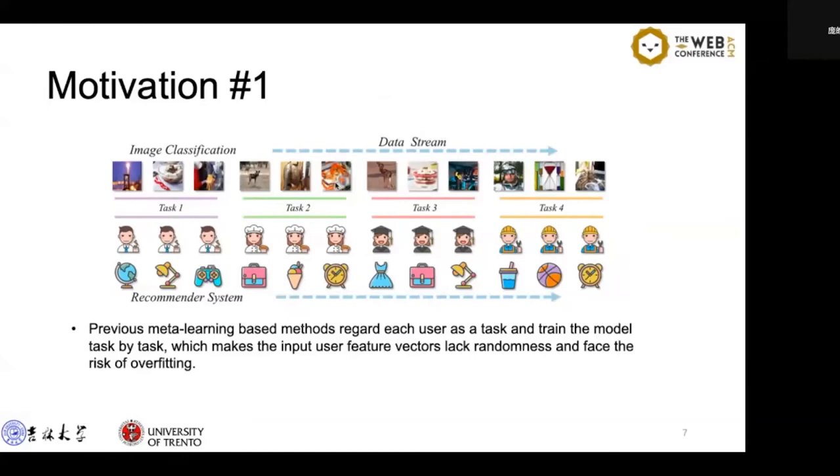This figure illustrates this problem. The blue arrows indicate the order in which data flows into the model for training. Notably, in image classification, data flows into the model with random label order.